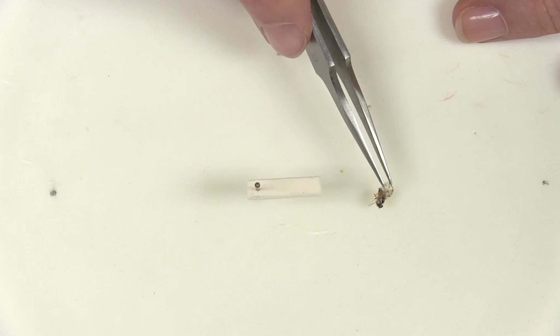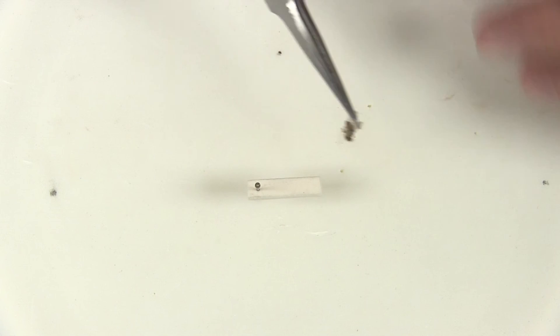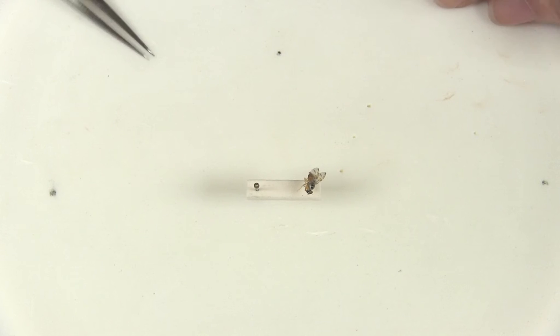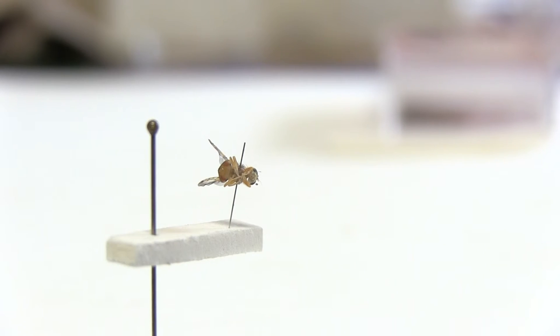Then, using the forceps, pin the micro pinned insect onto the end of the foam. Your pinned insect should either look like this, or it should be pinned through the center dorsal side of the thorax.